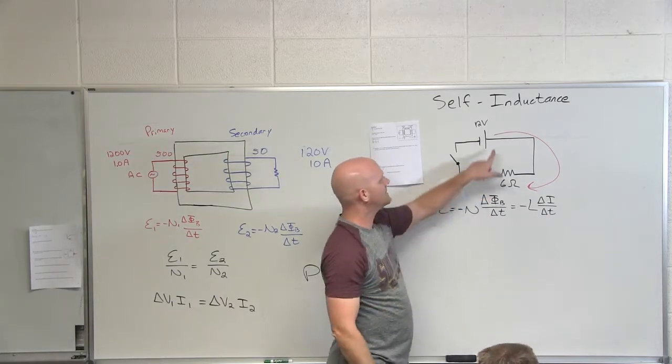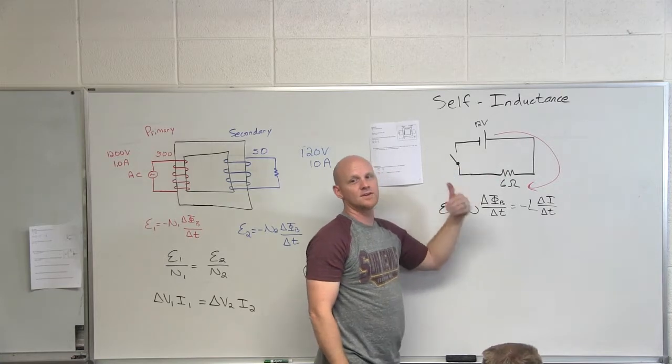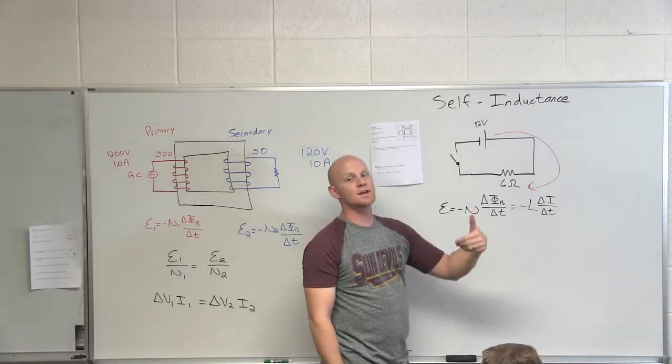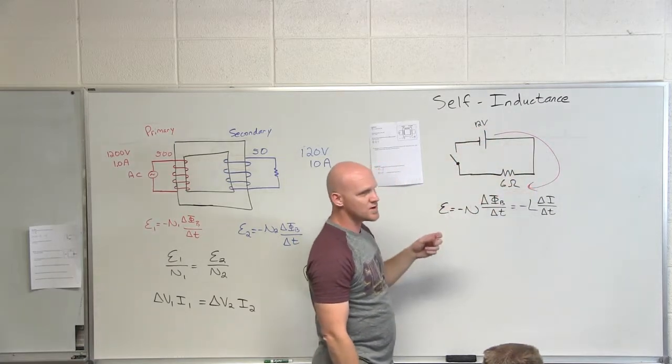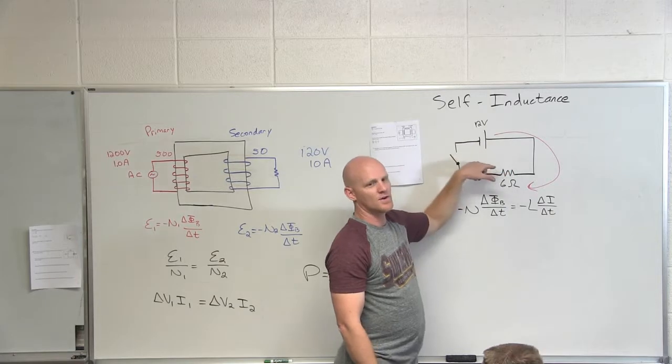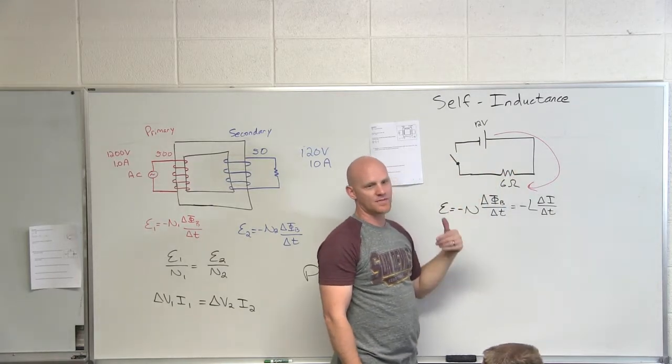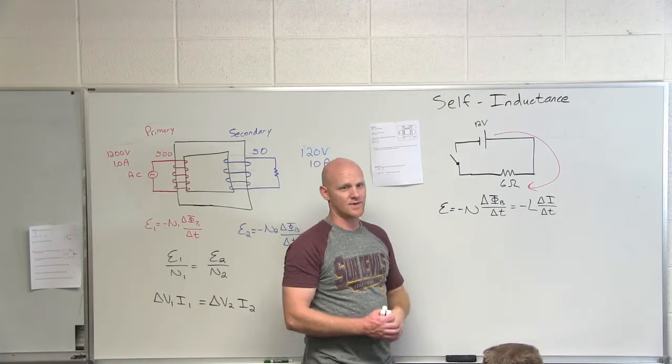And so because this has self-inductance, what we'll find out an inductor actually does is it actually opposes the rate of change in the current. And so this current wants to get from zero up to two amps the moment we close the switch. But due to self-inductance, we're going to oppose that, and it's going to take some time to get there. We don't instantaneously get there. So it's actually self-inductance is the reason why we don't instantaneously get there.